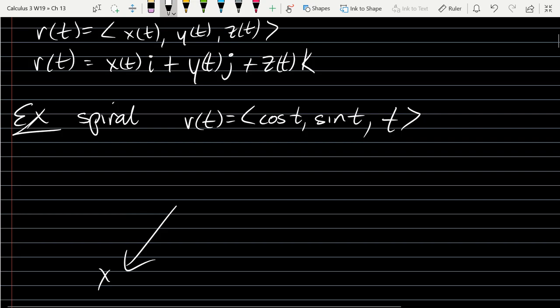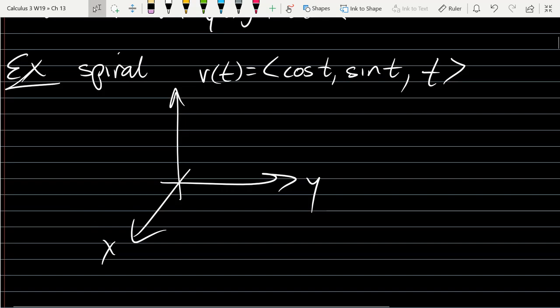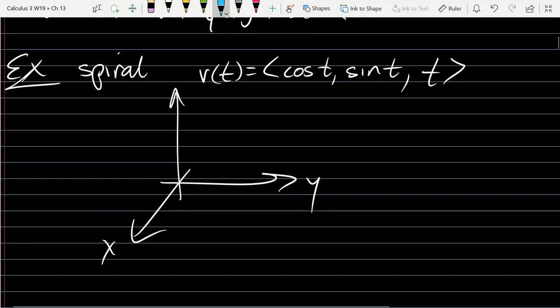Now how do you graph it? Very carefully. Put the x there, the y right there, and z going up. Let's think about the orientation that we would get. When t is 0, I'll use blue for our curve. When t is 0, we're going to be here on the positive x axis.